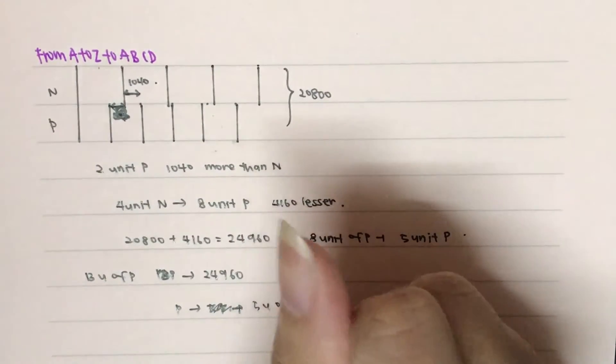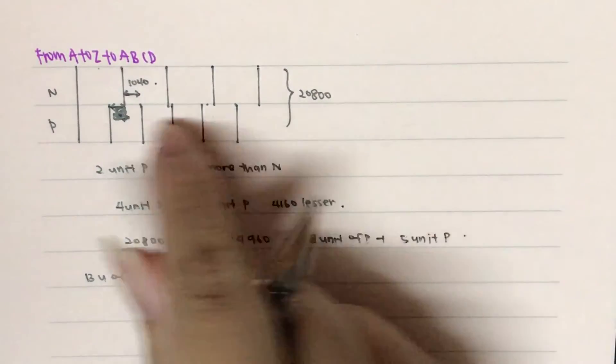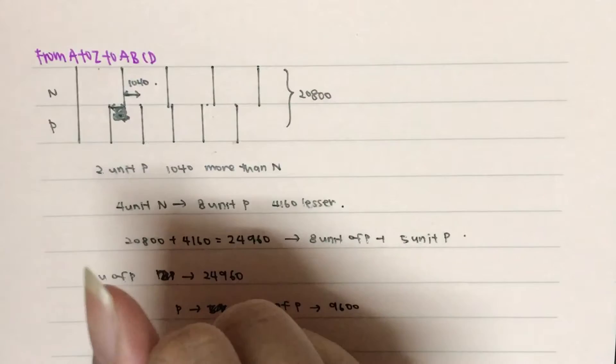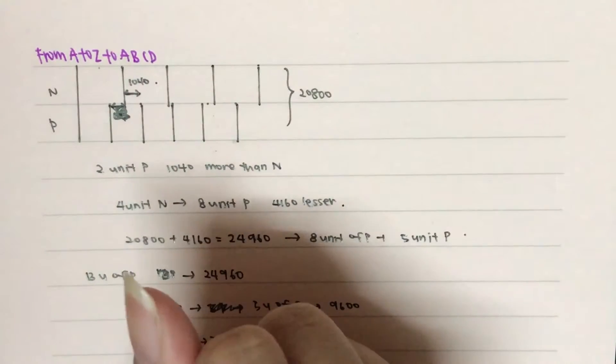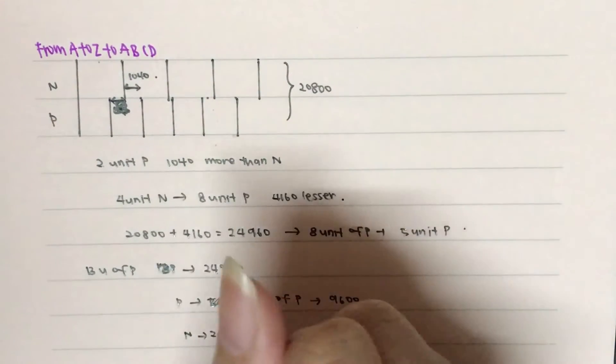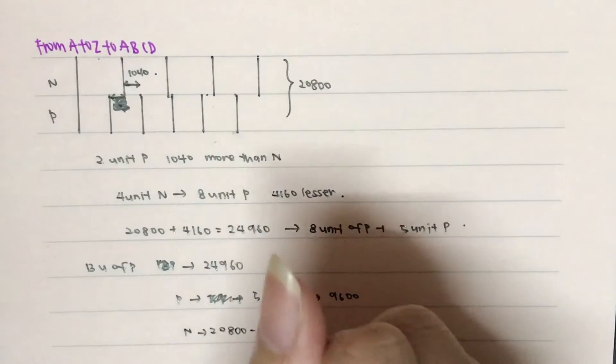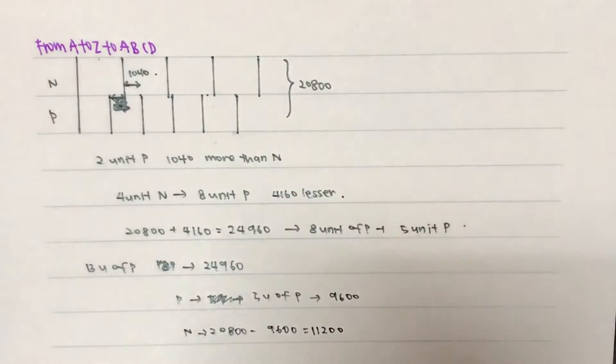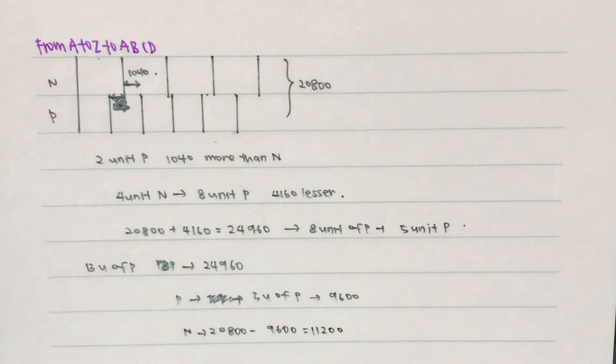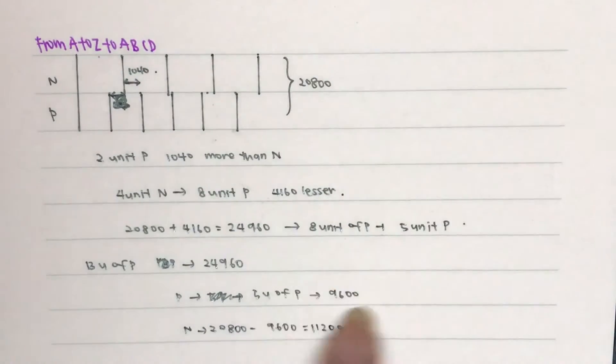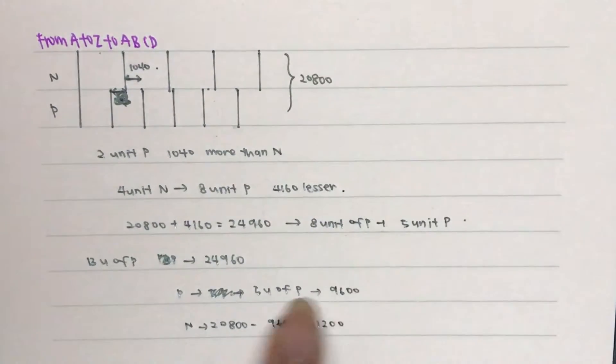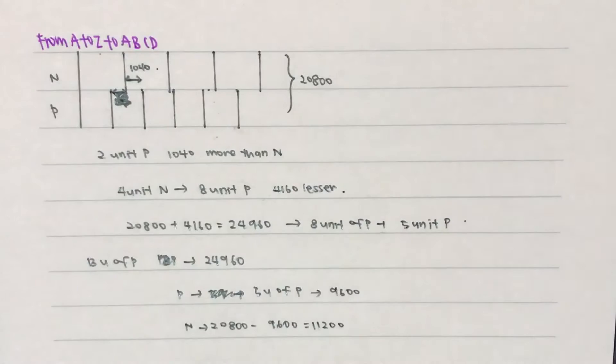So, therefore, this will actually give us the answer of 9,600. And given that this is 9,600, we will be able to find National Library, which is 20,800 minus 9,600. And this gives us 11,200. That's the answer for this question. There is 9,600 in the People's Library and 11,200 in the National Library.